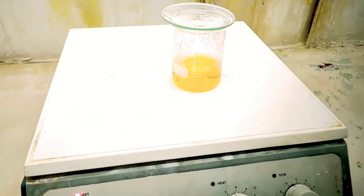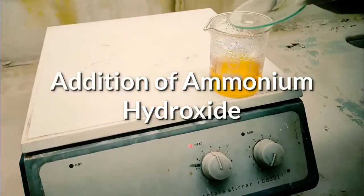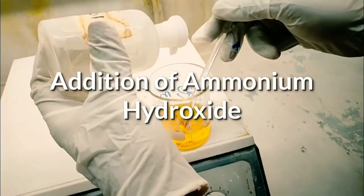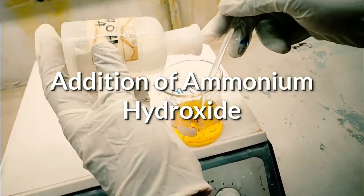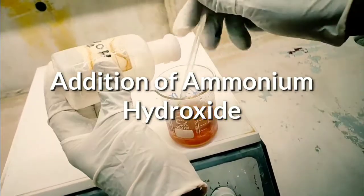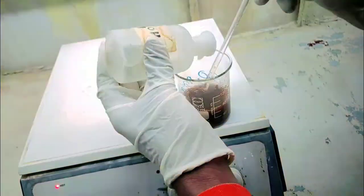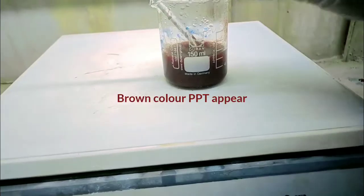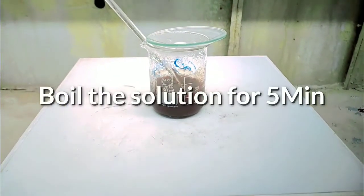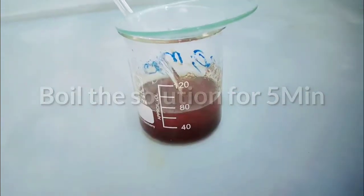Place it onto the center of the hot plate. Add ammonium hydroxide until brown color precipitate appears. Boil for five minutes and keep for settling down.